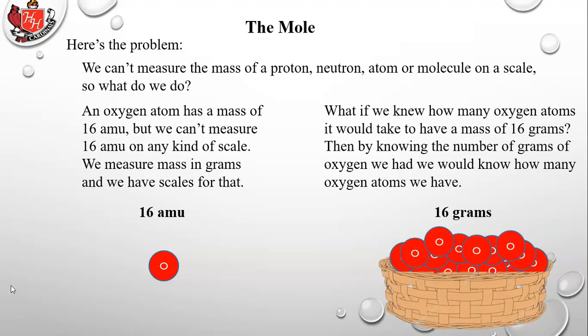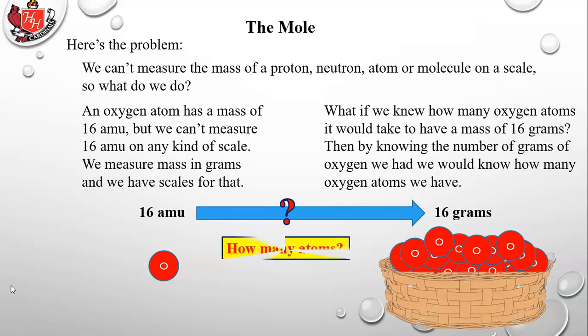What if we knew how many oxygen atoms it would take to have a mass of 16 grams? Then by knowing the number of grams of oxygen we had, we would know how many oxygen atoms we have. In chemistry we're interested in numbers of atoms and molecules because a chemical reaction matches up a certain number of atoms of one substance with another to produce a product, so we need a way to know how many atoms we have by mass.